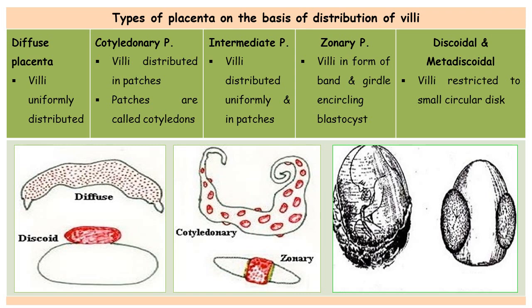This type of placenta is called metadiscoid. Metadiscoid placenta may be monodiscoid or biodiscoid. In the case of human beings, the placenta is monodiscoid — only a single disc-like structure attaches the fetus to the maternal tissues. In the right figure, biodiscoid is shown, where two disc-like structures are present. This kind of biodiscoid placenta is observed in monkeys.